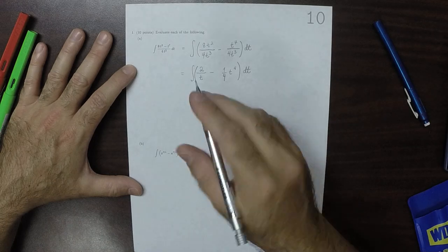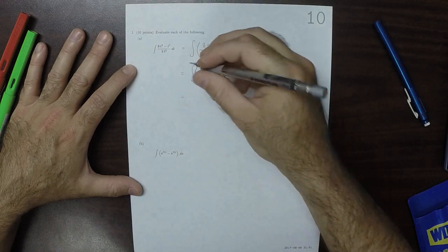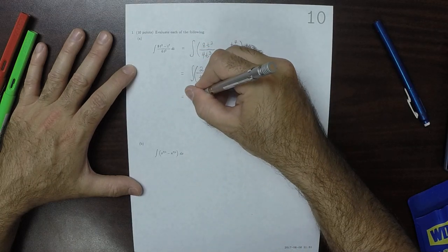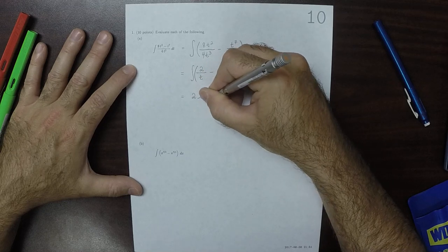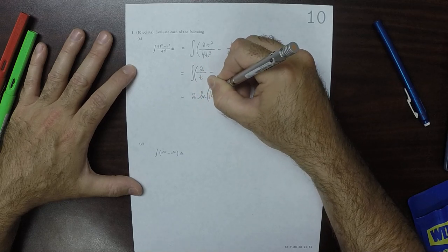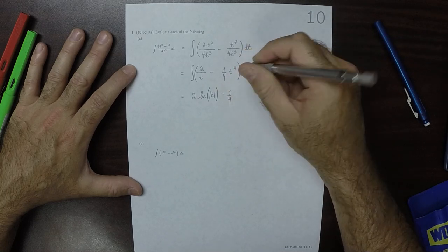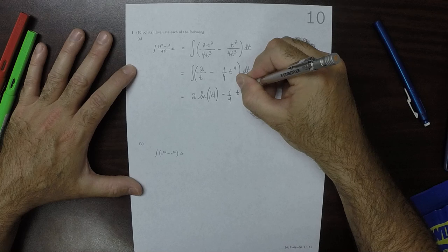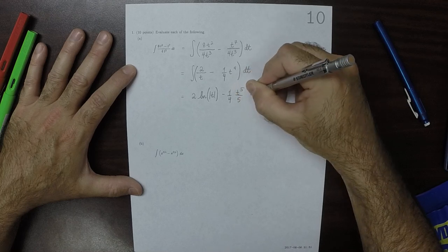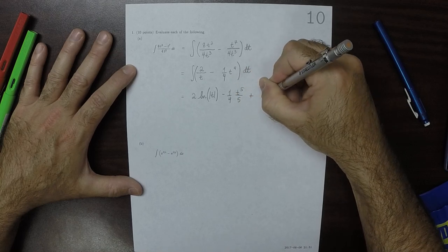And now each one of these is an antiderivative that you know. So as for that one, that would be 2 natural log absolute value t. And then minus 1 4th. And we can use the power rule for that one, t to 5 over 5, and then plus a constant.